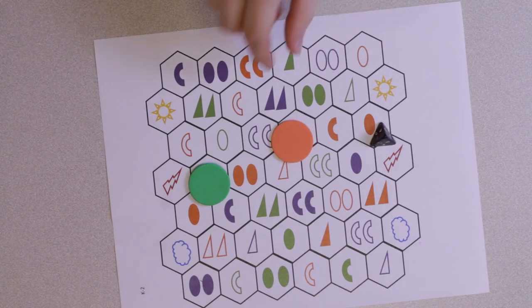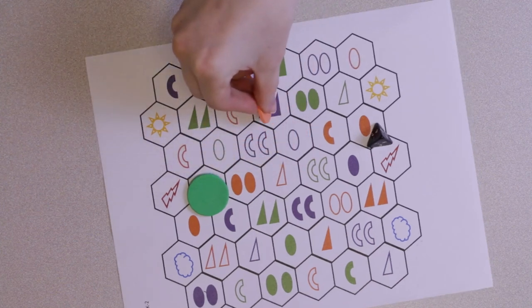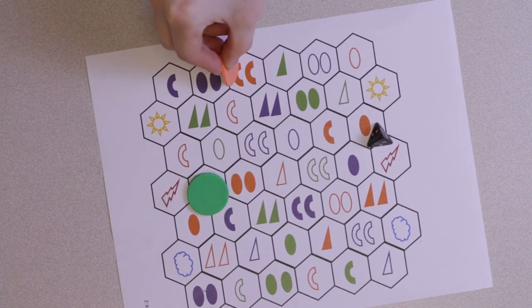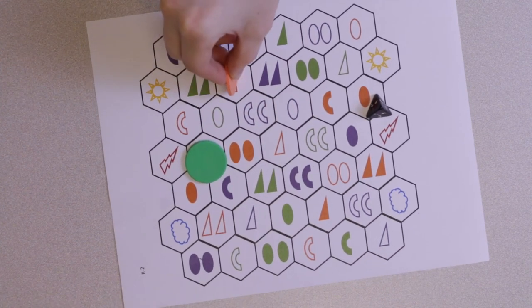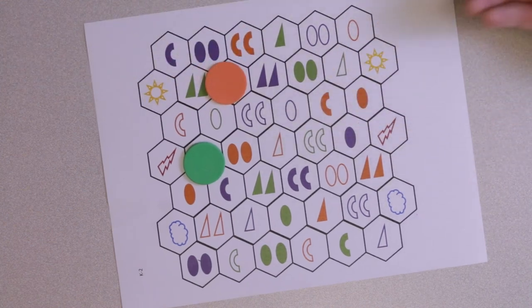This play is repeated until one of the players lands on their ending space. The first person to land on their ending spot wins the game. Green wins the game because they reach the end spot first.